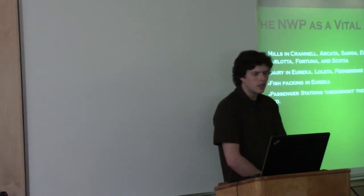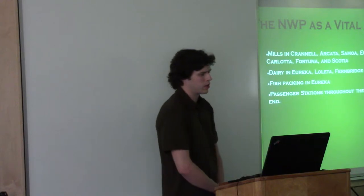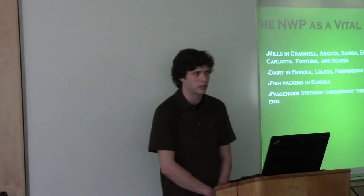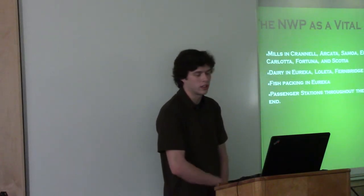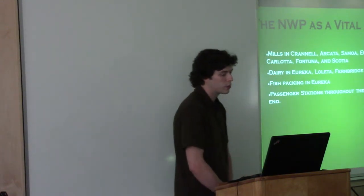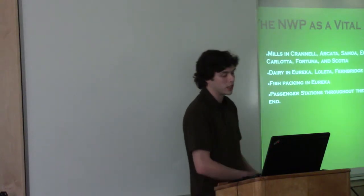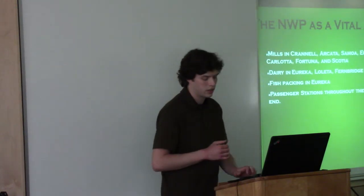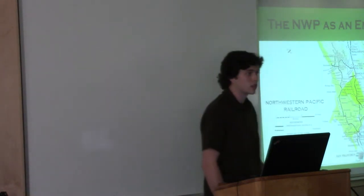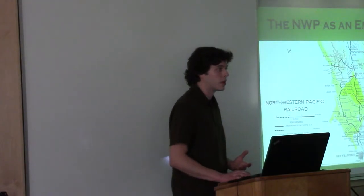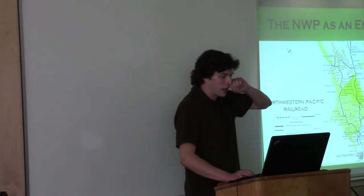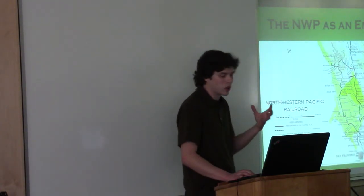Okay. So, NWP was a vital artery. There were mills in Cronel, Arcata, Samoa, Eureka, Falk, Carlotta, Fortuna, Scotia, and on and on. There's so many that I didn't even list it here. There was dairy in Eureka, Lolita in Fernbridge, fish packing in Eureka, and passenger stations throughout the canyon in North End. And, it really was an empire. This is just, just briefly, just look at those dotted lines. That's all trackage at NWP at one point. It went all the way out to Casadero, out near Bodega Bay. They were narrow gauge lines. It really was an empire.